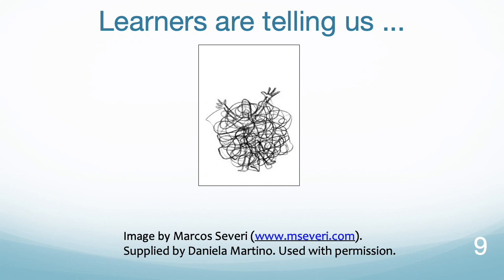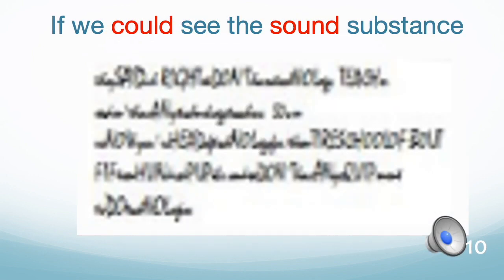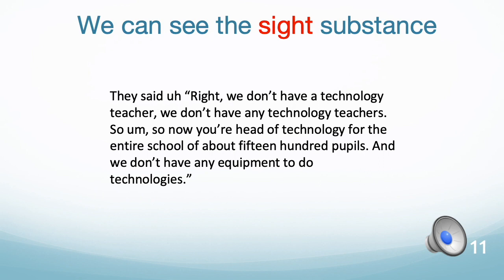Learners increasingly are telling us that they are bamboozled when it comes to real-life listening, and indeed even in classroom listening — a cheerful class can often be reduced to frowning unhappiness when the recording is played and the listening task starts in earnest. If we could see the sound substance, it might look something like this: smudged, unclear. That is the norm that expert speakers cope with. Here is what it actually sounds like: 'Right, we don't have a technology teacher — we don't have any technology teachers. So now you're head of technology for the entire school of about 1,500 pupils, and we don't have any equipment to do technology.'